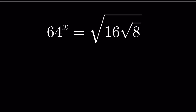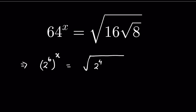64 raised to the power x is equal to 16 times the square root of 8 under square root, and we have to find the value of x. We can write 64 as 2 raised to the power 6, whole raised to the power x, and 16 as 2 raised to the power 4, and 8 as 2 raised to the power 3.